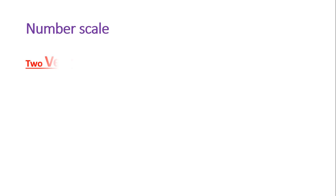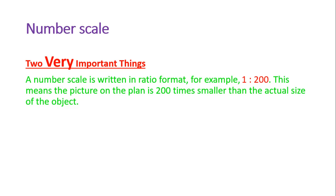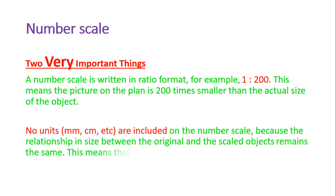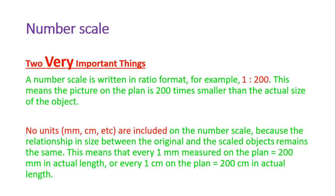The number scale. Two very important things. Firstly, a number scale is written in a ratio format, for example 1 to 200. This means that the picture on the plan is 200 times smaller than the actual size of the object. The second thing is that there are no units, because the relationship in size between the original and the scaled object remains the same. In other words, 1 millimeter on the plan is 200 millimeters in actual length, or 1 centimeter on the plan is 200 centimeters in actual. It doesn't matter what unit it is as long as you use the same unit.